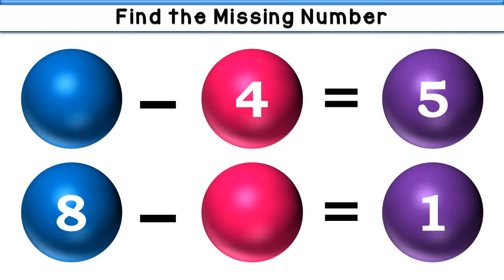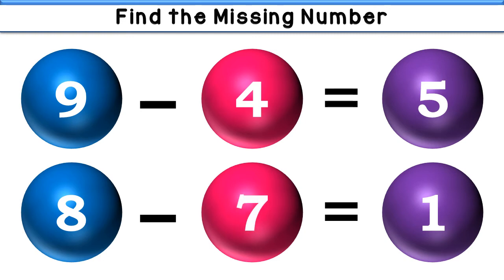What minus 4 is equal to 5? The answer is 9. 9 minus 4 is equal to 5. Next: 8 minus what is equal to 1? The answer is 7. 8 minus 7 is equal to 1.